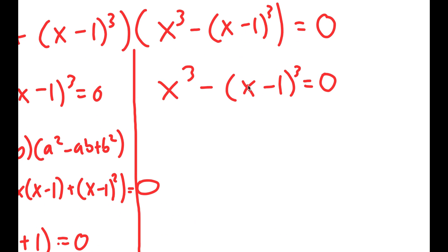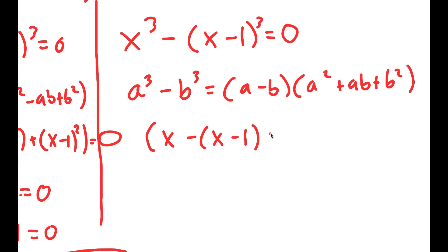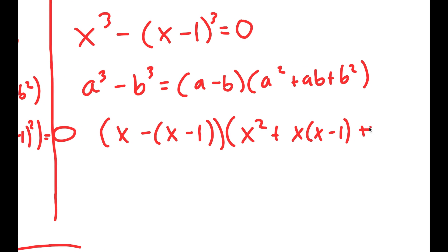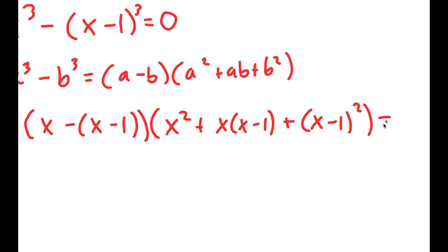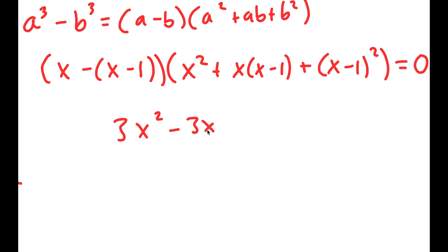Going back to x to the power of 3 minus x minus 1 to the power of 3 equals 0, I'm going to use the property a³ minus b³ equals a minus b times a squared plus ab plus b squared. So I get x minus (x minus 1) times x squared plus x times (x-1) plus (x-1) squared equals 0. These two x's cancel out, so I get negative 1 times x squared plus x(x-1) plus (x-1) squared, which all simplifies to 3x squared minus 3x plus 1 equals 0.